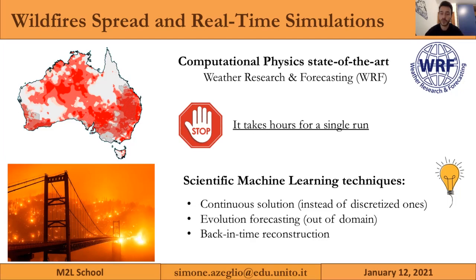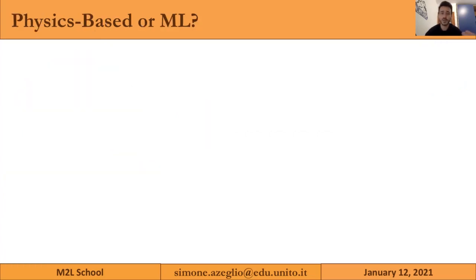In order to reach our goal, we are proposing scientific machine learning techniques, which have several advantages. The three main advantages are: the possibility to obtain a continuous solution instead of a discretized one on a grid, the possibility to forecast the evolution outside the limits of the simulation domain, and the possibility to reconstruct the evolution back in time, which is useful for forensic analysis.